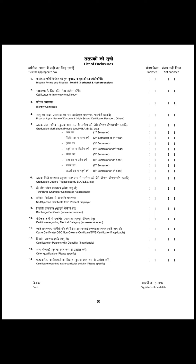This is the last part - you have to carry 5 copies of the bio data form. You fill one original and make 4 copies, so 5 total. Every document you have to take 5 copies as well. So bio data form: 1 original plus 4 copies means 5 copies in total.